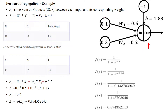That single neuron is taking two inputs: X1 is 0.1 and X2 is 0.3 — so two inputs, two features. As we have discussed, a neuron has two functions: one is the summation function and the other is the activation function.